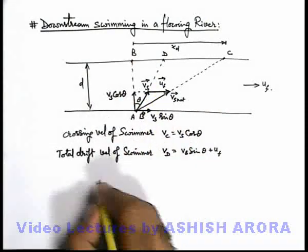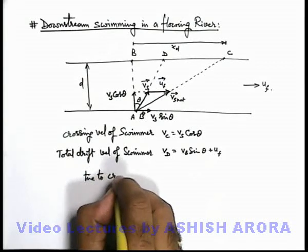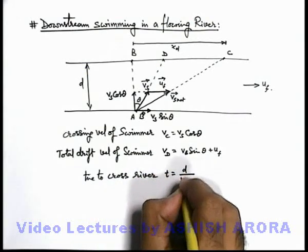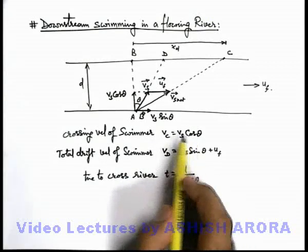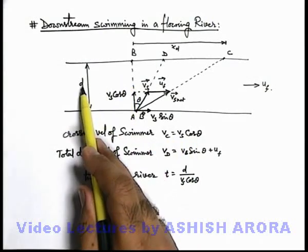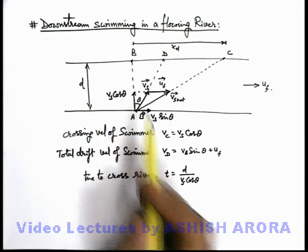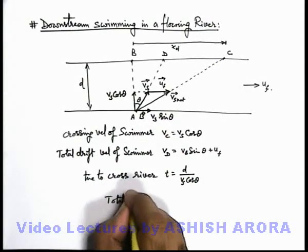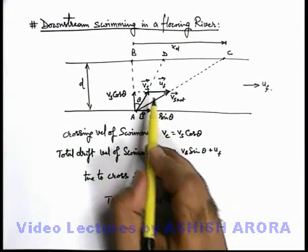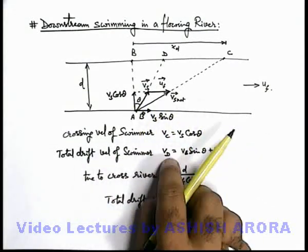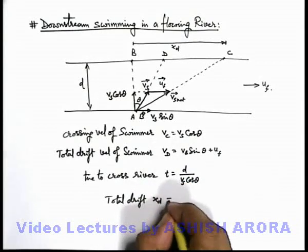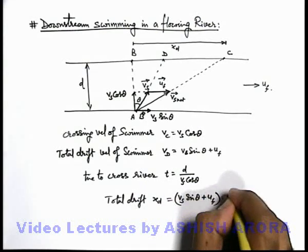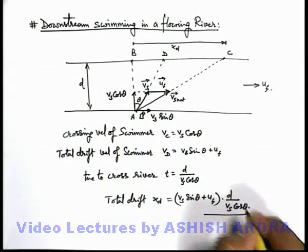In this situation, the time taken to cross the river is d divided by v_s cos θ, because v_s cos θ is the velocity with which the swimmer is crossing the river and he has to cover distance d. The total drift x_d can be calculated as drift velocity multiplied by time: that is (v_s sin θ + u_f) multiplied by d divided by v_s cos θ.